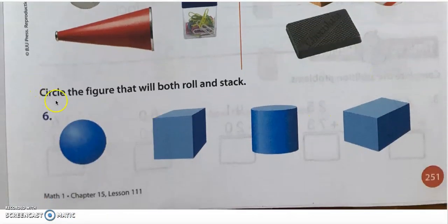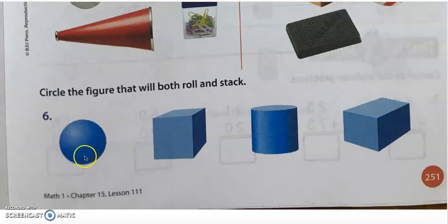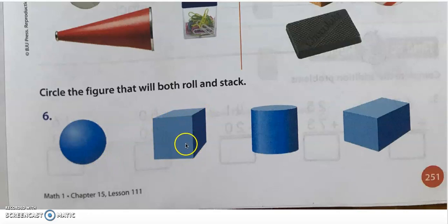Number six: let's circle the figure that will both roll and stack. For a figure to both roll and stack, we must have both curved surfaces and flat surfaces. This sphere — yes it can roll, but it cannot stack. And this cube — it can stack, but it cannot roll because it does not have curved surfaces.